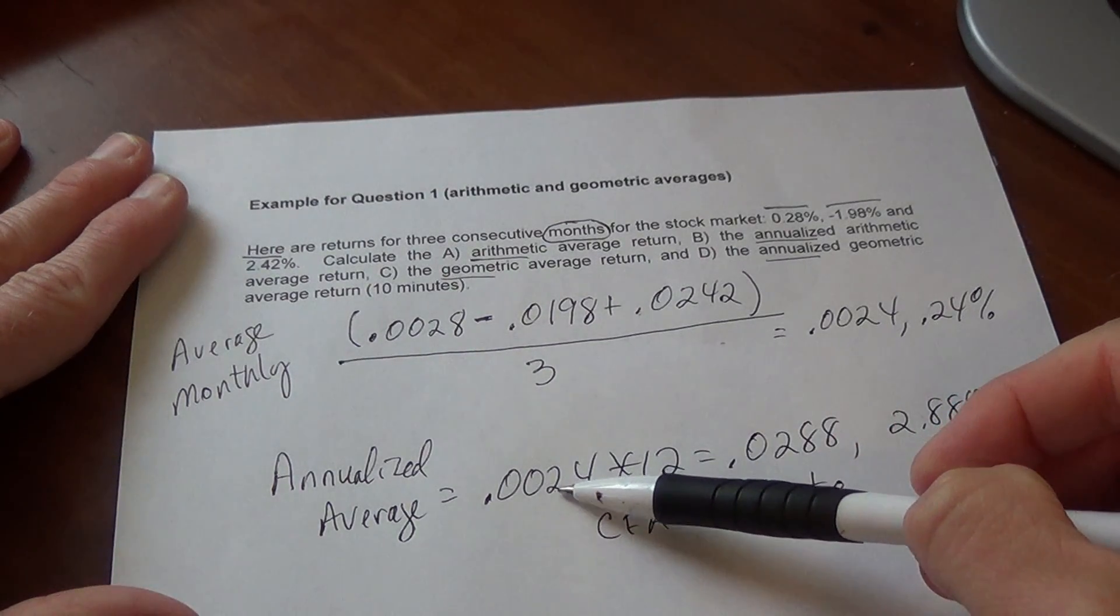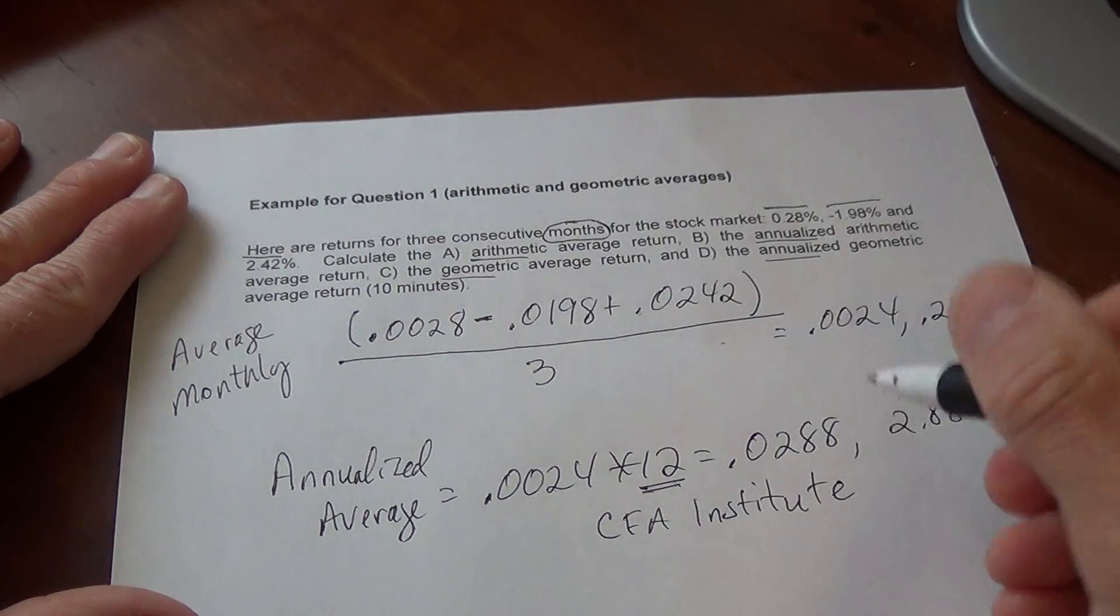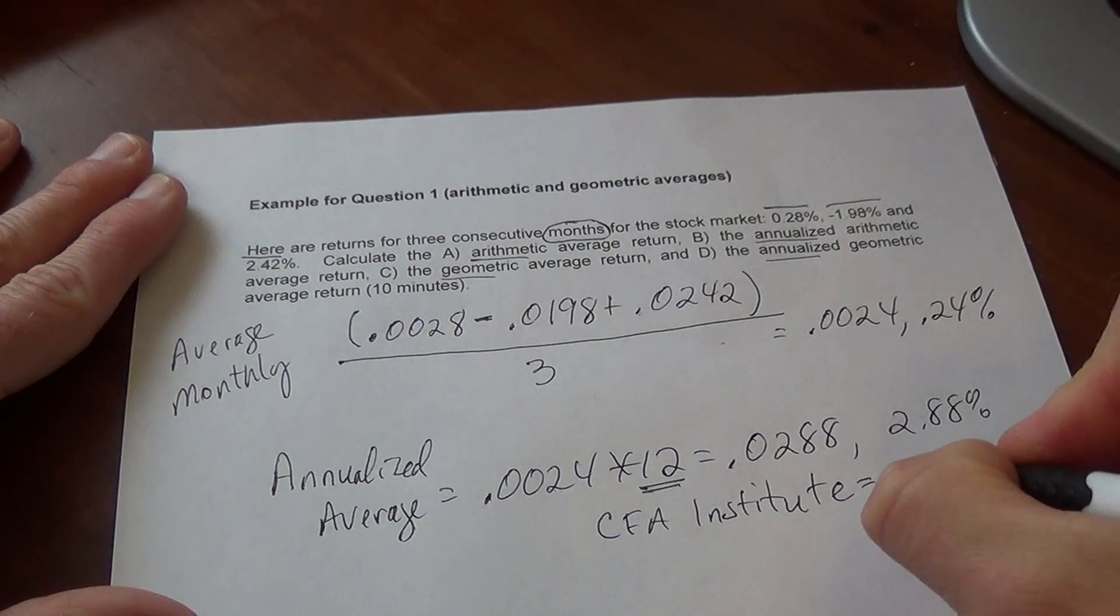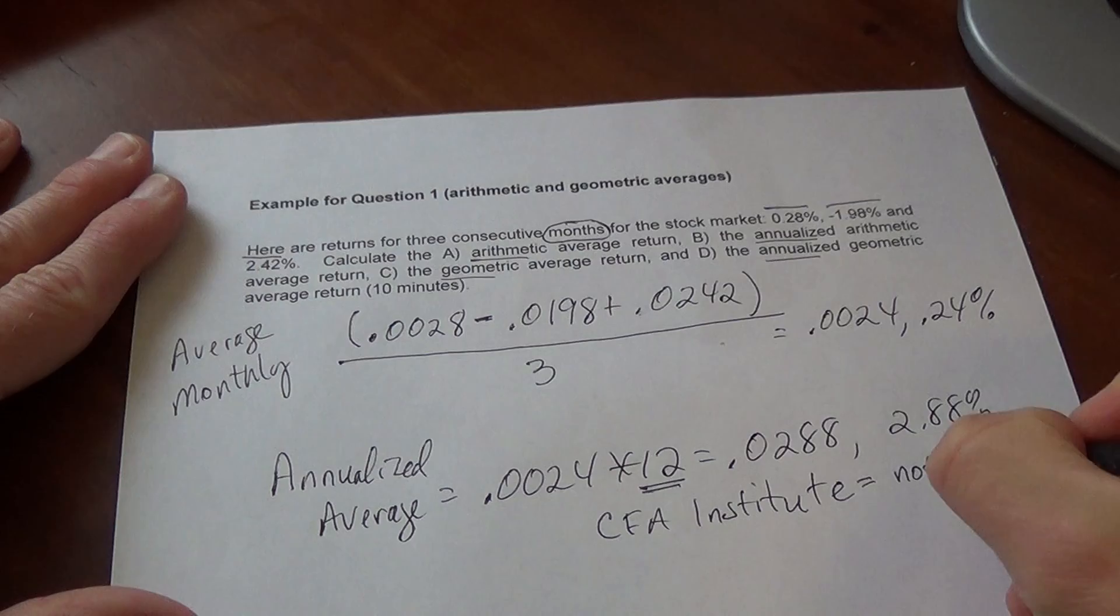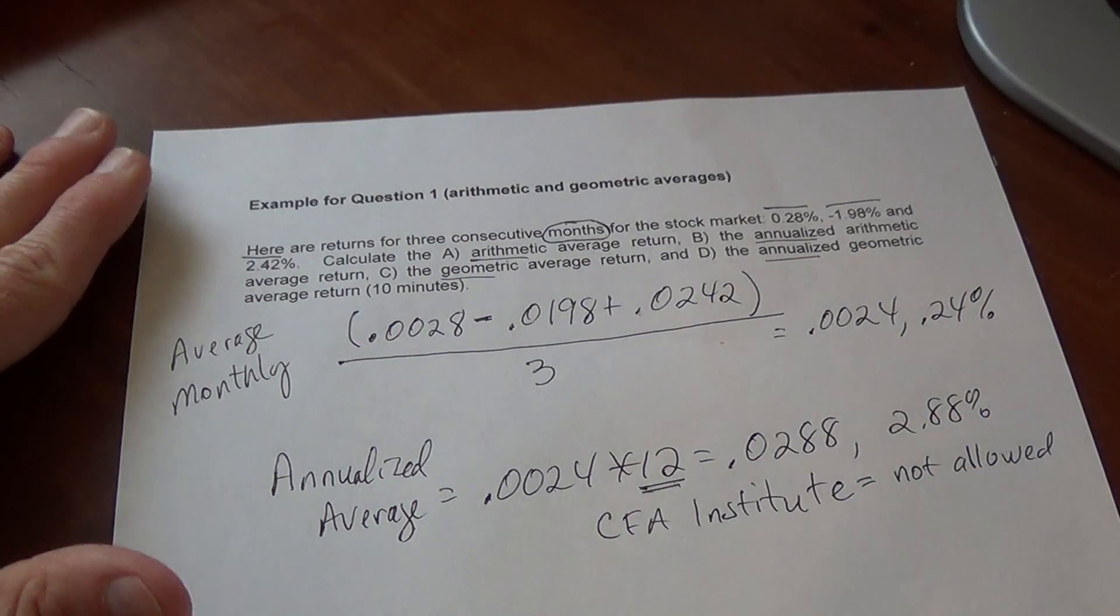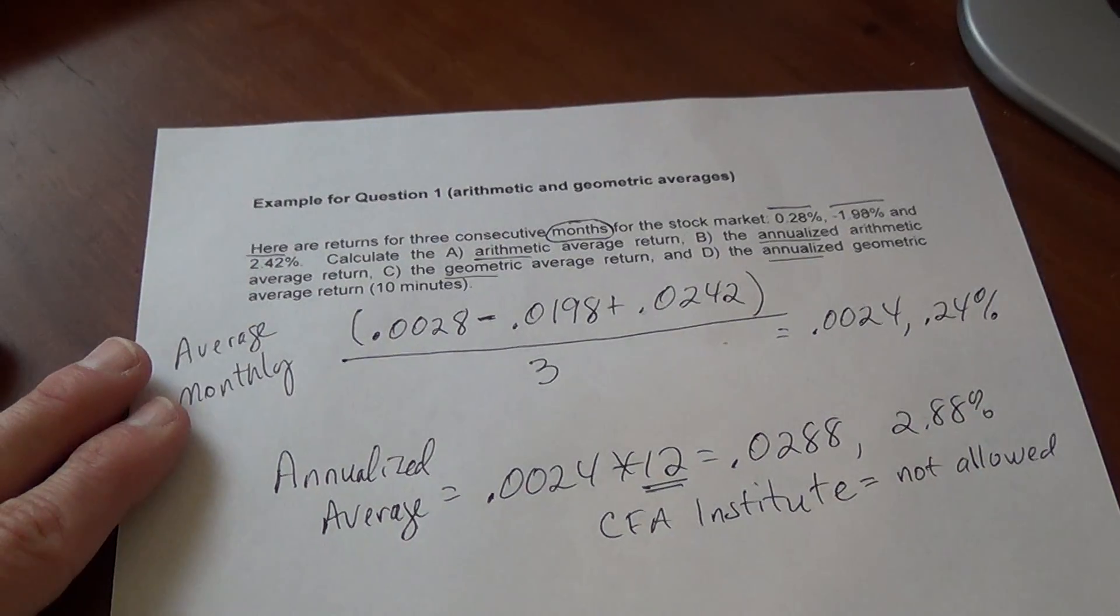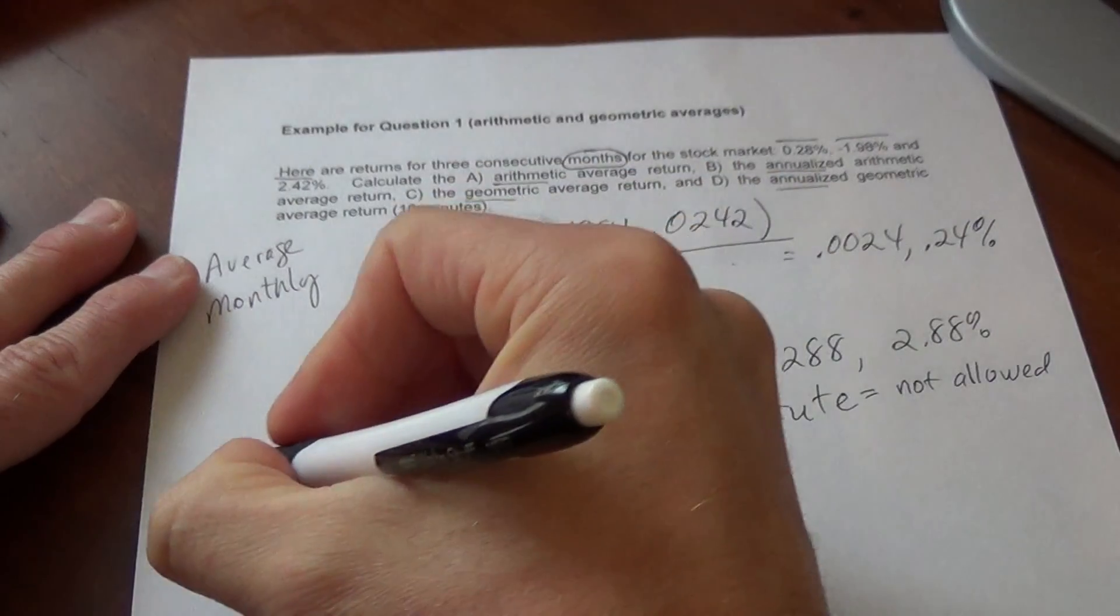Here we have only three months worth of data, that's less than one year. So according to the CFA Institute, this is not allowed. Annualizing three months worth of data would not be allowed. So there's the arithmetic average.